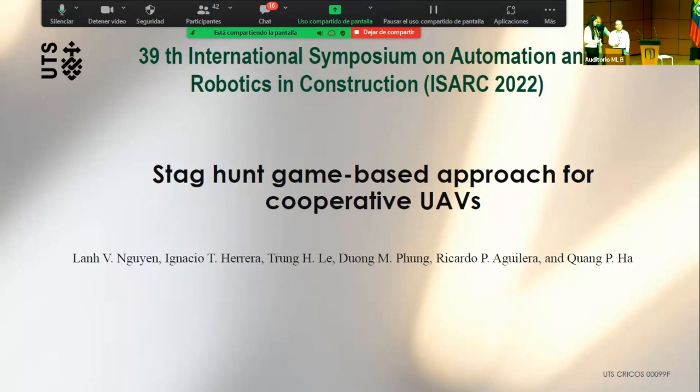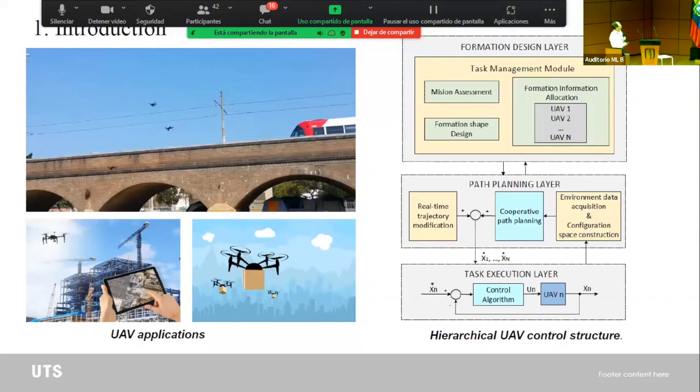In our project, we use multiple UAV drones to monitor a construction site or infrastructure assets. On the left is a monorail bridge of Sydney, and you can see a group of three UAVs flying to monitor the bridge. This image from the internet conceptualizes the idea of using multiple UAVs to monitor the progress of construction projects. On the right is using UAVs to deliver materials.